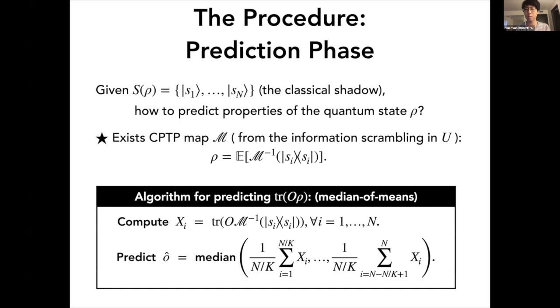This is based on the following fact that we proved. By using the information scrambling properties of the unitary u, you could show that there exists a CPTP map, so essentially a quantum channel given by this M, such that the underlying quantum state is equal to the expectation value of M inverse applied on these classical shadows Si. So based on this fact, you can easily apply the following algorithm for estimating the expectation value. This is also known as median of means estimation to make the prediction much more robust and to improve concentration. So what you would do is you would compute this xi, and then you would average chunk of them and take the median of everything, and that's your resulting prediction.